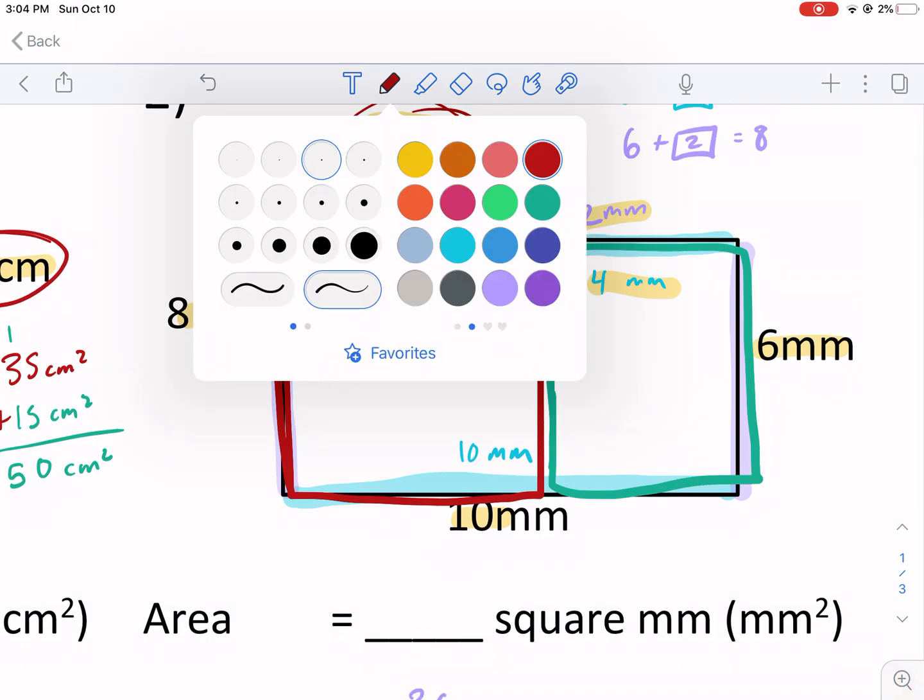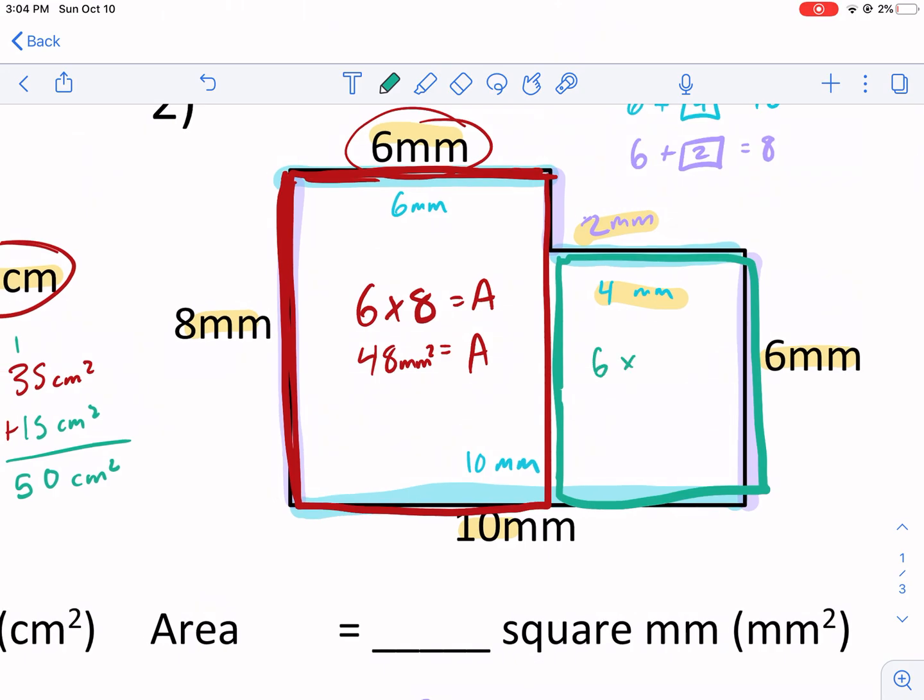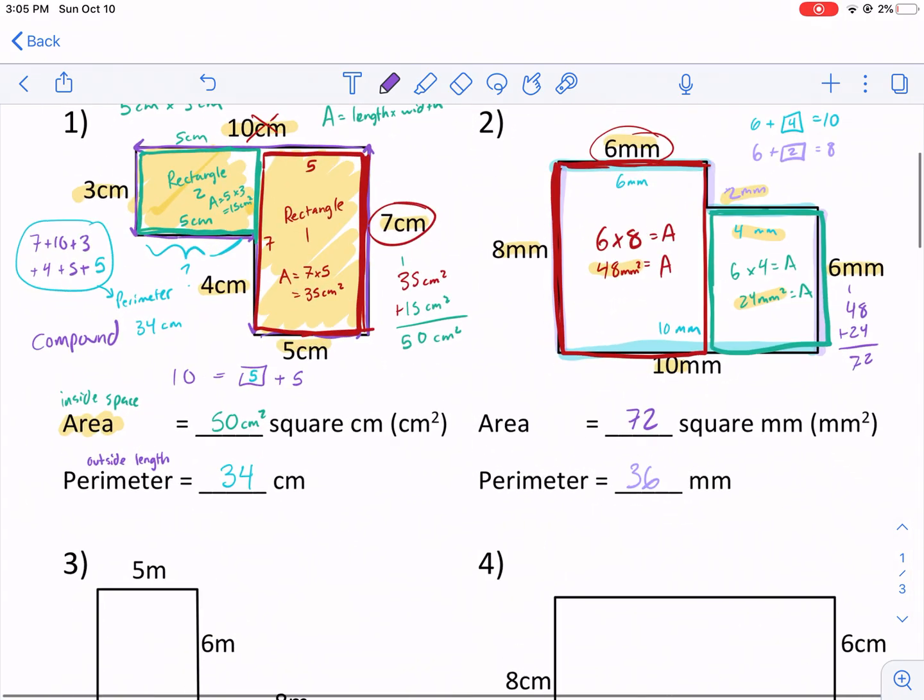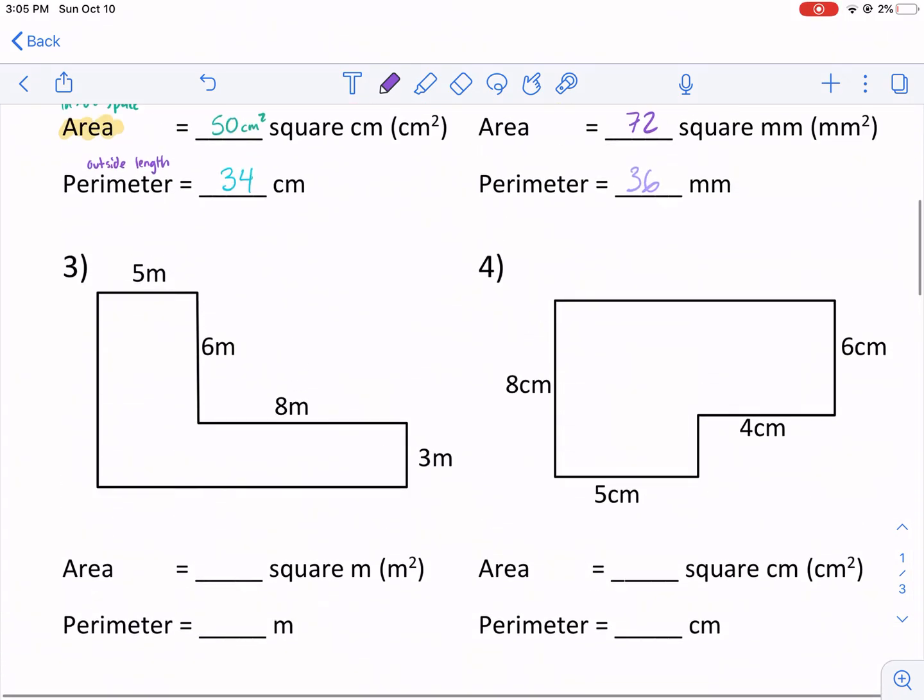Now let's go over to the green. The green, we only have one of the dimensions. We have six. Oh, actually we do have the second dimension. Here is the second dimension, left to right, that's four. So it's six by four is the area, and that's 24 millimeters squared. So if I'm going to find my area of the compound shape, I need to add those two together. So we do 48 plus 24, that gives me a 12. So I put the two, carry the one, and then I have a four, six, seven, 72. So that's 72 square millimeters.